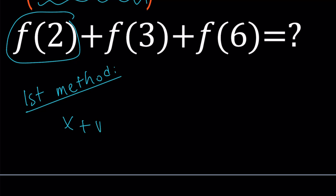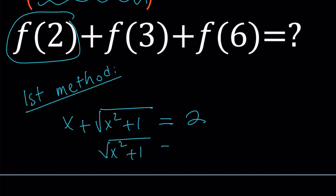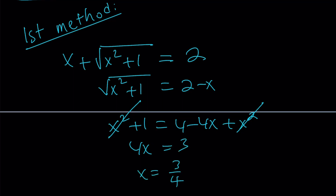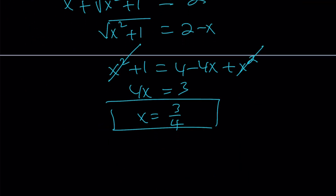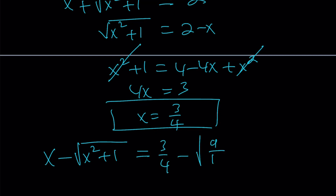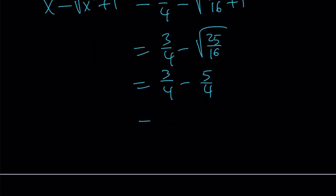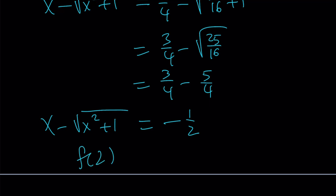Let's set this equal to 2 first. This is a radical equation, so isolate the radical and square both sides. That gives you x squared plus 1 equals 4 minus 4x plus x squared. The x squared cancels out, leaving us with 4x equals 3 and x equals 3 fourths. We substitute that into the right-hand side — x minus the square root of x squared plus 1 — giving us 3 fourths minus the square root of 9 over 16 plus 1, which is 25 over 16. So that's 5 fourths, and 3 fourths minus 5 fourths is negative 1 half. Therefore, f of 2 equals negative 1 half.